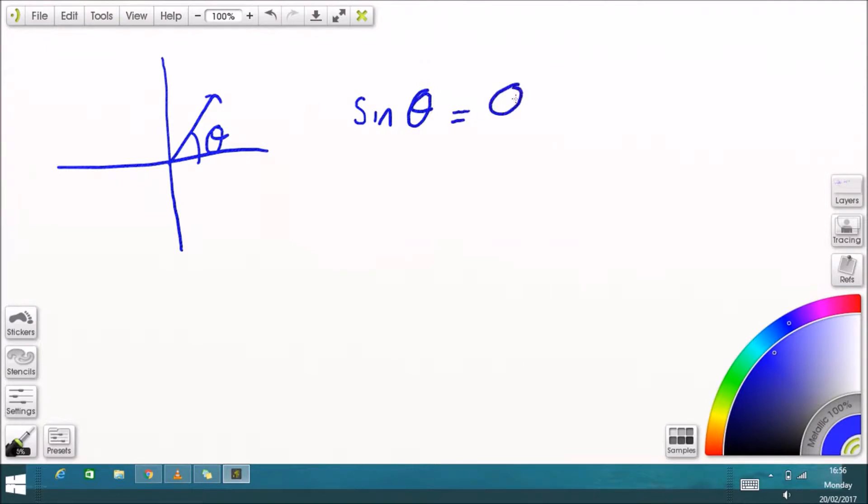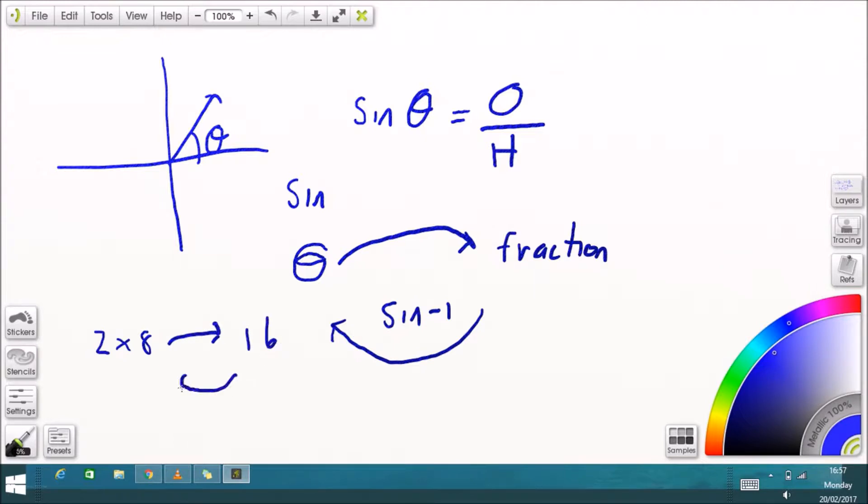Taking an angle and working out the opposite divided by the hypotenuse involves just using the function of sine. Sine takes you from an angle to a fraction. To go backwards you just need to use inverse sine, which is the opposite, same as when we multiply by 2. When we multiply 2 by 8 we get to 16. If you want to go back, you do the opposite of multiply by 8, and that's divide by 8, and that gets you back to 2 where we started.